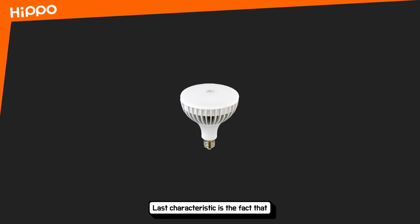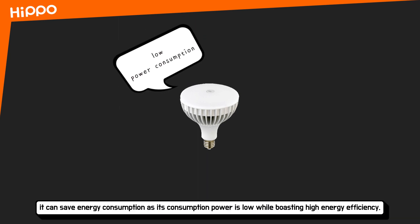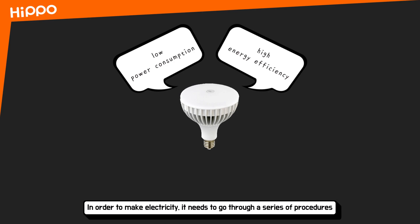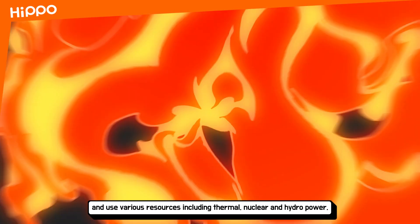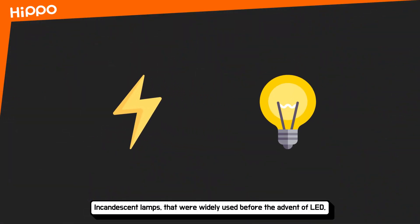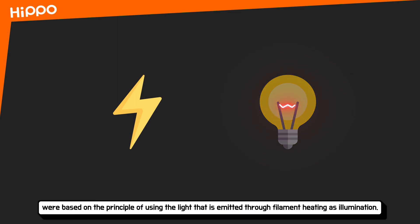Another characteristic is that LED can save energy consumption, as its consumed power is low while boosting high energy efficiency. In order to make electricity, it needs to go through a series of procedures using various resources, including thermal, nuclear, and hydropower. Incandescent lamps, which were widely used before the advent of LED, were based on the principle of using light emitted through filament heating as illumination.